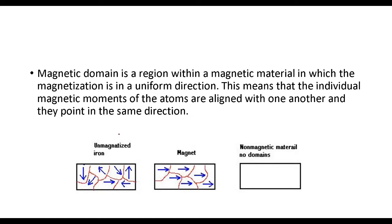This is how the magnetic domains of unmagnetized and magnetized substances look. A domain is a region within a magnetic material in which the magnetization is in one uniform direction. In unmagnetized iron, the magnetic moments of the atoms are not aligned — they point in different directions. But when you magnetize iron, the individual magnetic moments of the atoms align with one another and point in the same direction. In non-magnetic materials, there are no magnetic domains at all, which is why they do not show any magnetic properties.